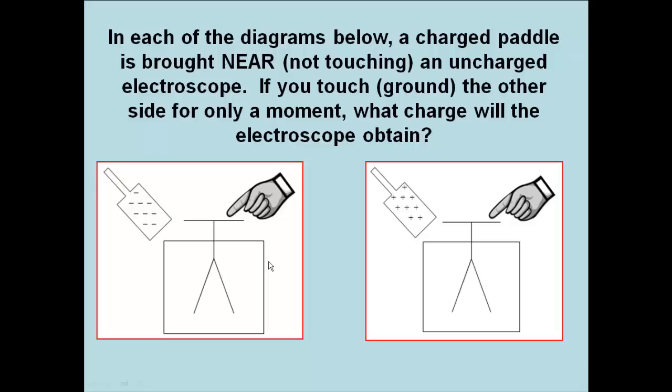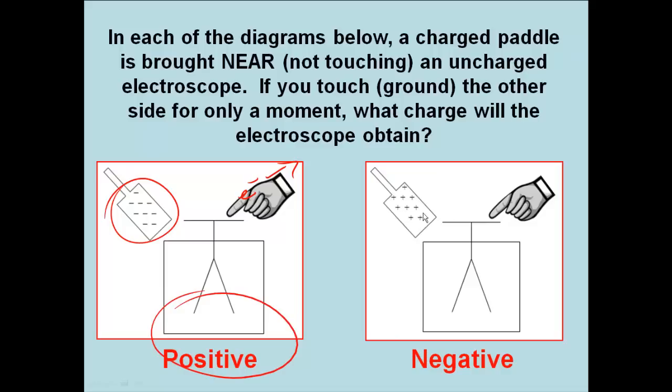And what about this one? In each of the diagrams below, we have this charged paddle brought near. What if we ground it? What's going to happen? Pause the video, think about it. Yep, you guessed it. This negative paddle is going to make electrons run away. So when we ground it, these electrons leave the electroscope, leaving it net positive. And in the other case, electrons love this positive paddle. So we're allowing electrons to enter the electroscope and try to get closer to those protons. And when we move our hand away, it becomes net negative.